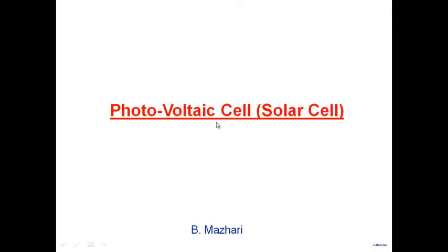A solar cell is also called a photovoltaic cell. Why is it called a photovoltaic cell? Photovoltaic — it generates a voltage. When light is shined on it, a potential difference appears across a P-N junction.